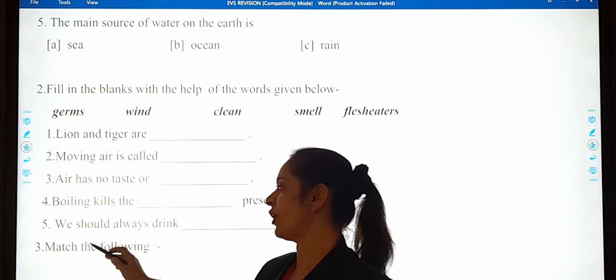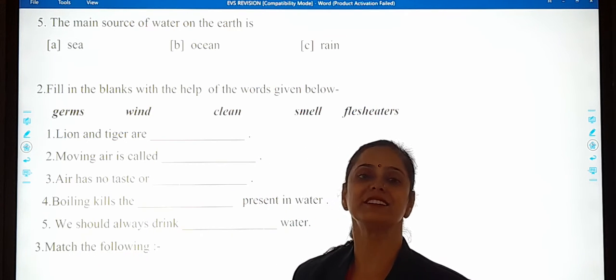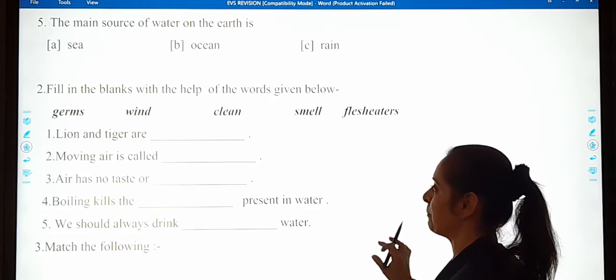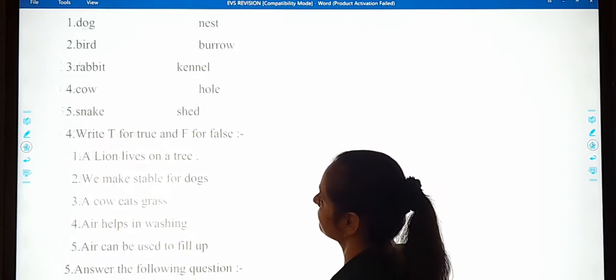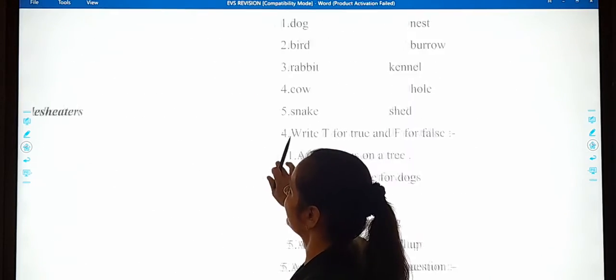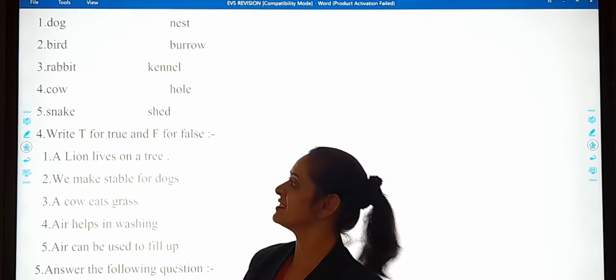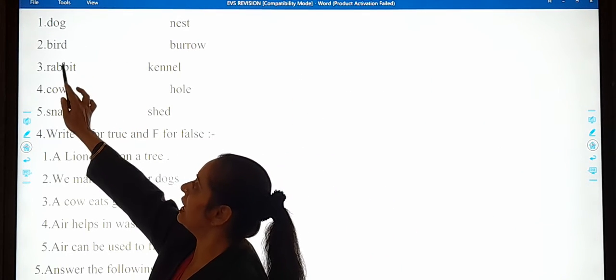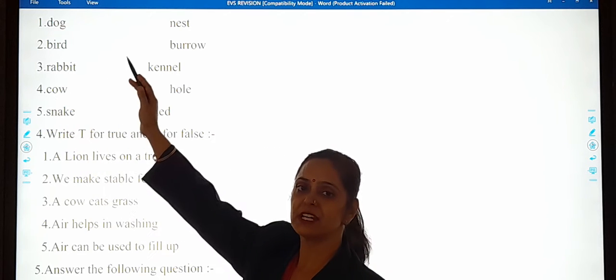And the third one will be your favorite. Matching, do matching, match the followings. Bada maza aata hai, match karne mein hai na? See, dog, first one is dog. C, dog, bird, rabbit, cow, snake. In first A part, I have written the name of animals.